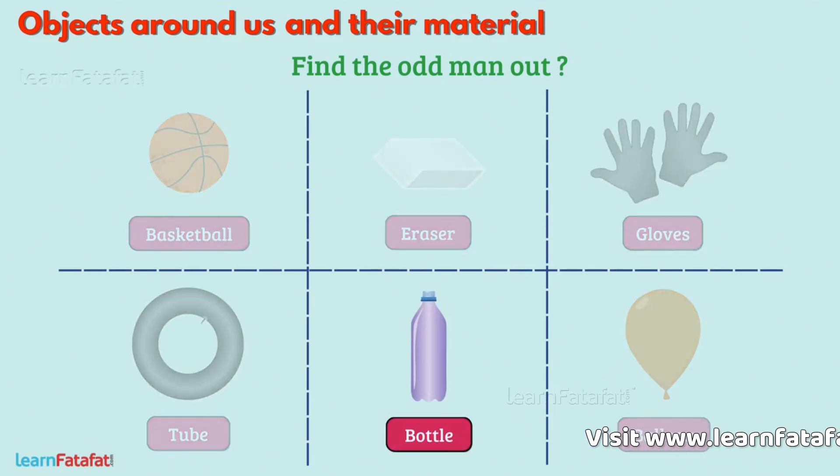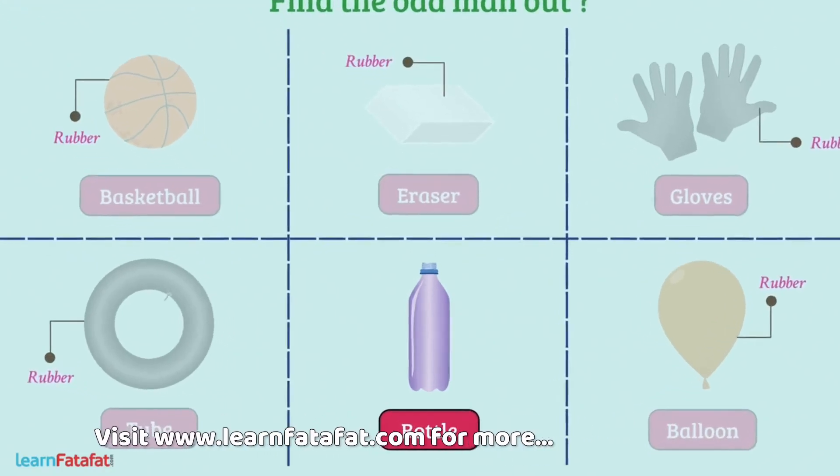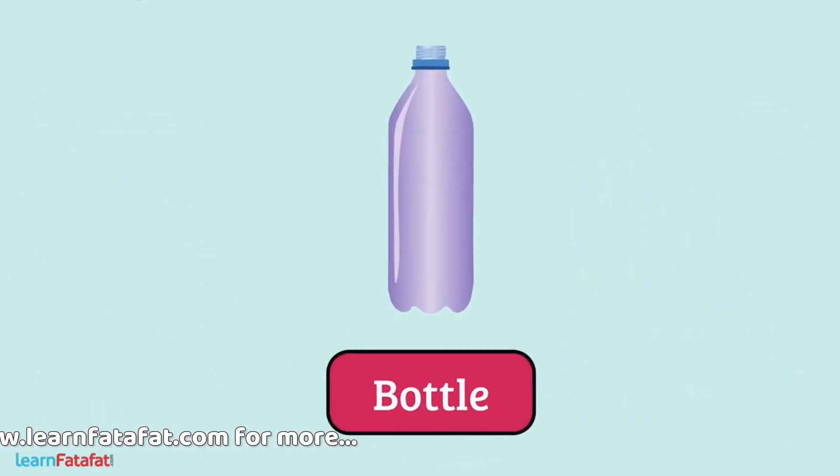The answer is bottle. We use material called rubber for making all the things except bottle. For bottle, we use plastic or glass material.